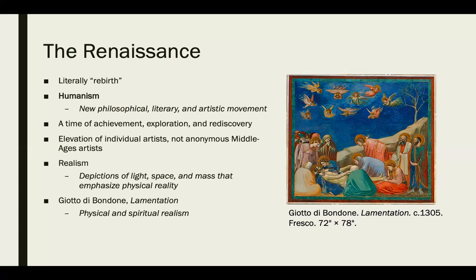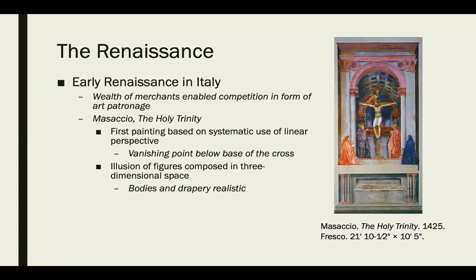This is Giotto di Bondone's Lamentation — a combination of physical and spiritual realism. It's a great example of symbolism and iconography, with halos around the figures' heads representing spiritual figures. All parts of the world in earlier times have a lot of symbolism and iconography, usually connected to religion in some way.